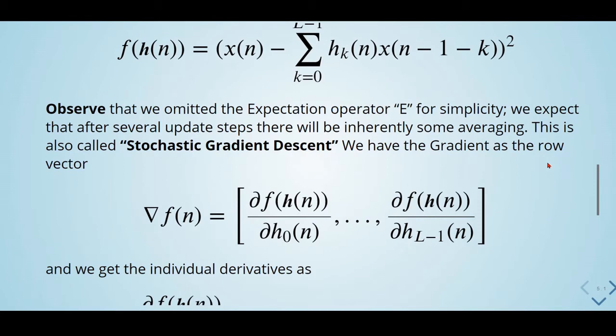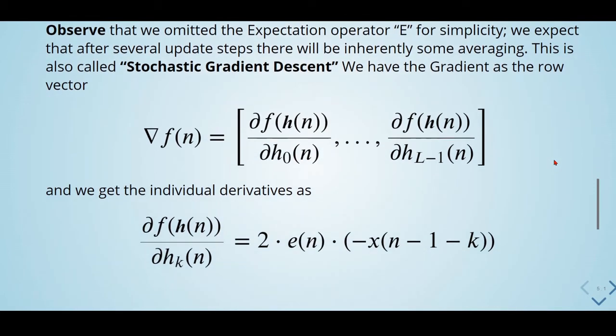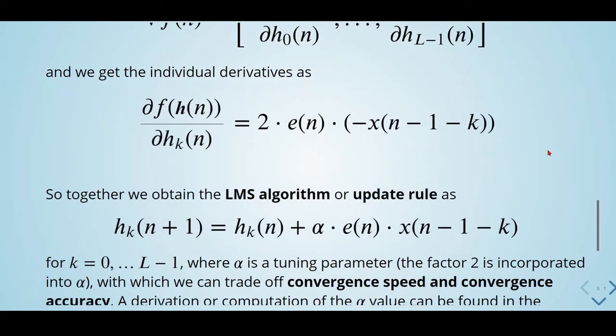And we get the individual derivatives by this formula here. So together, we obtain the LMS algorithm for the update rule given by this formula here, for k going from 0 to L-1.